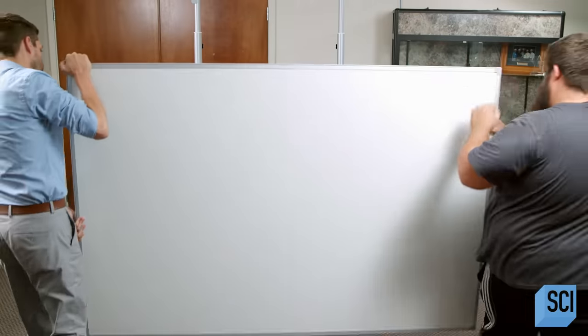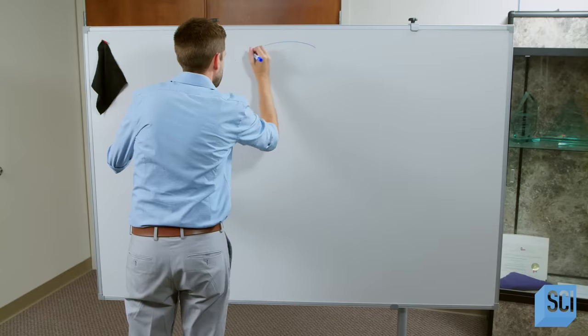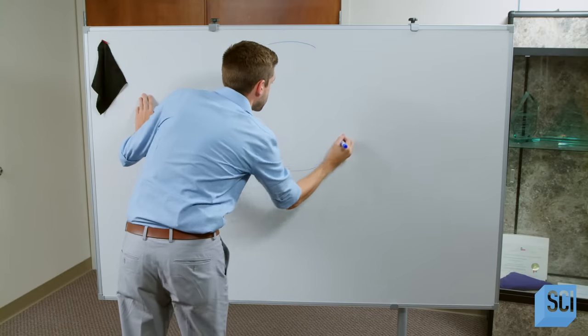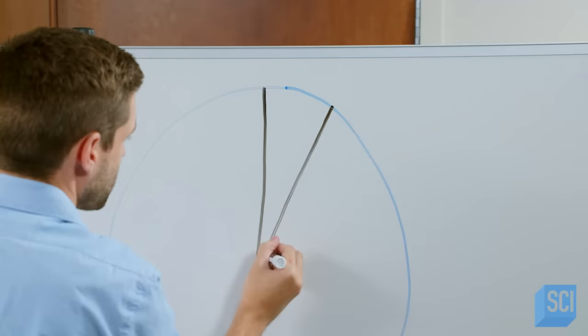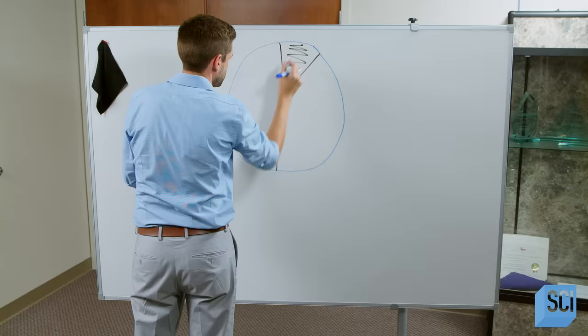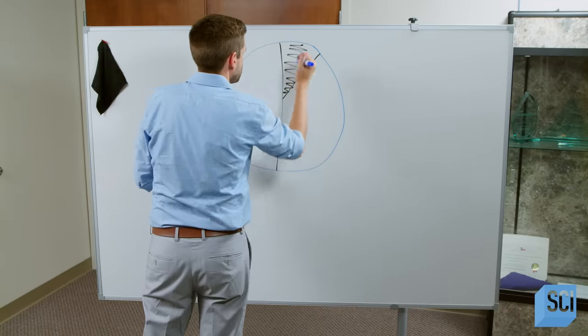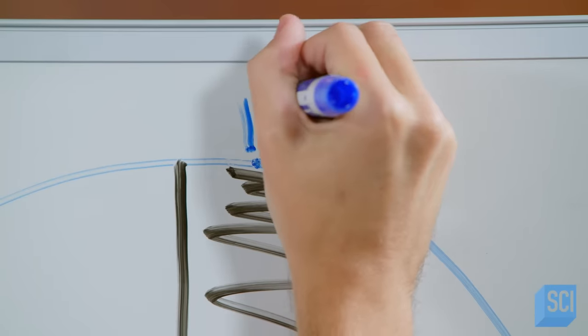Dry erase boards are also known as white boards. The boards wipe perfectly clean due to its non-porous surface and the dry erase ink. Dry erase ink contains release agents, which prevent the pigments from permanently adhering to the surface.